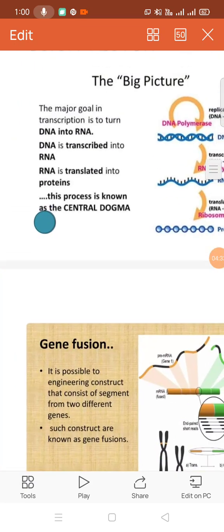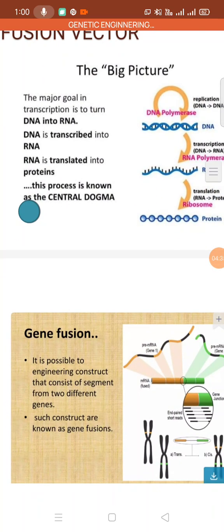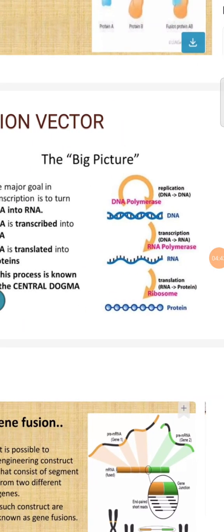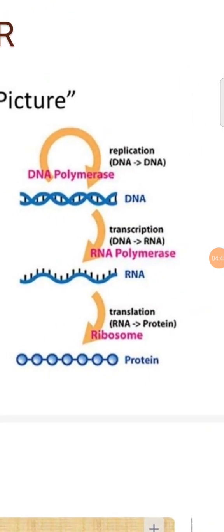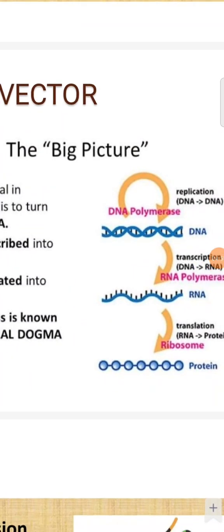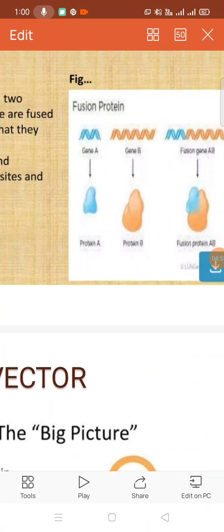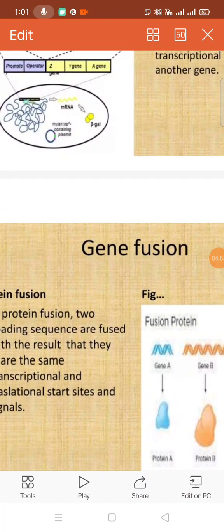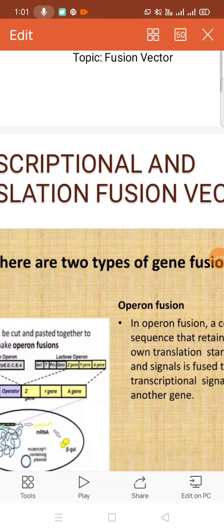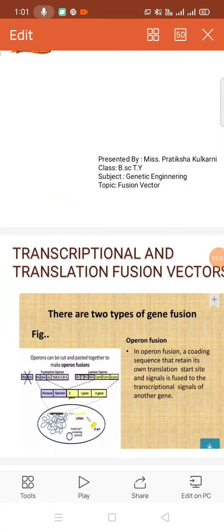In genetic engineering it is possible to construct segments of two different genes. Replication is carried out for two different genes; this is called a vector — the big picture. That covers transcriptional and translational fusion vectors.